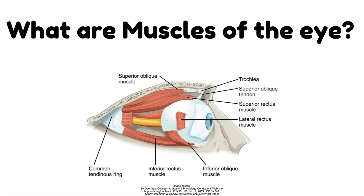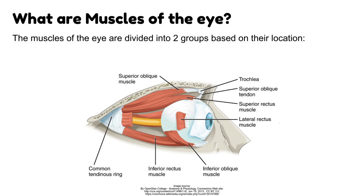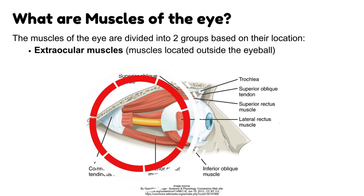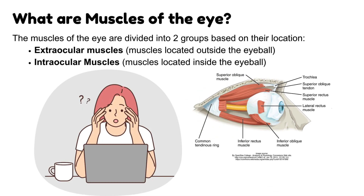What are muscles of the eye? The muscles of the eye are divided into two groups based on their location. These are extraocular muscles — muscles located outside the eyeball — and intraocular muscles — muscles located inside the eyeball. We will discuss them one by one.